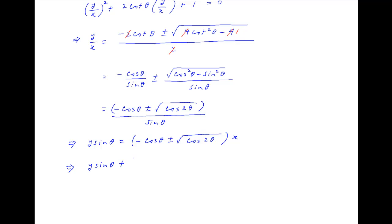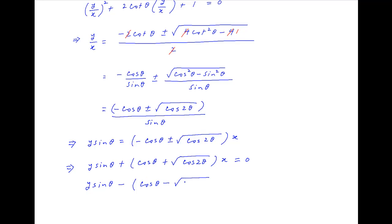Therefore, the two lines are: y sin θ + (cos θ + √(cos 2θ))x = 0, and y sin θ − (cos θ − √(cos 2θ))x = 0.